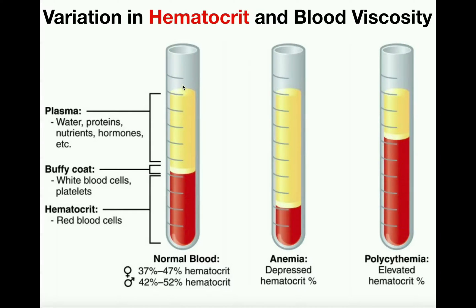This is actually what happens when you centrifuge a blood sample. Plasma, which we talked about before, contains the water component and proteins, nutrients, hormones, and all sorts of goodies. The remainder — the buffy coat and the hematocrit — these are all the formed elements. The buffy coat, which is really just about 1% of the blood, contains the white blood cells or leukocytes and the platelets or thrombocytes. The hematocrit down here is obviously going to be the red blood cells or erythrocytes.